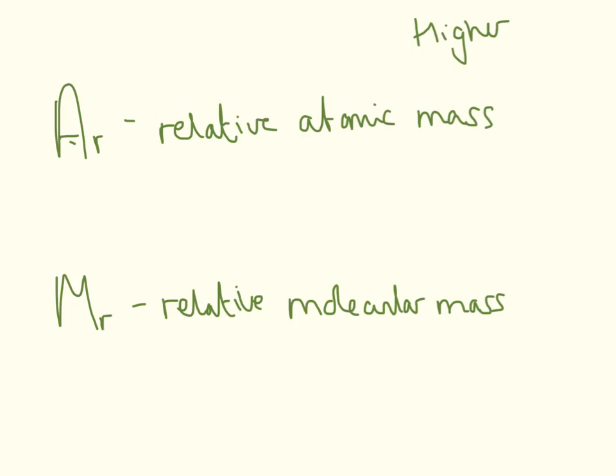So AR is a relative atomic mass, and MR is a relative molecular mass. So a relative atomic mass will be used for something like silicon, carbon, magnesium. Relative molecular mass will be used for something like carbon dioxide or water.